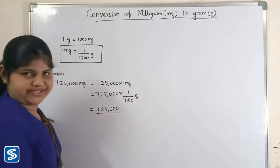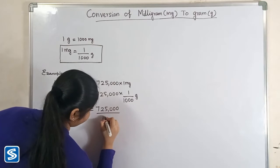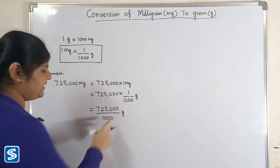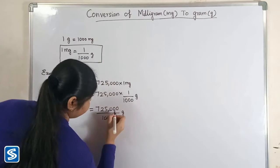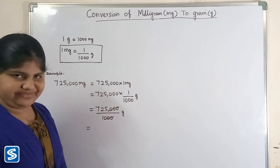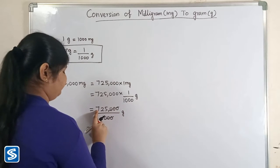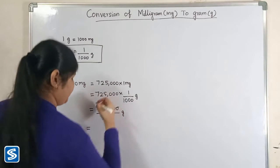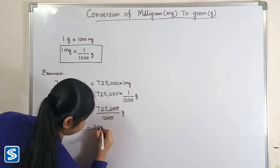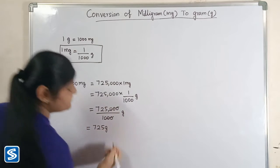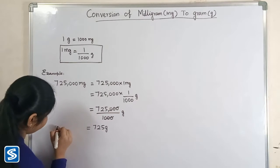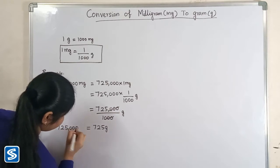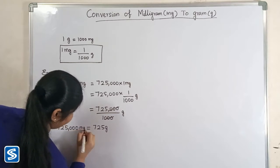So 725,000 divided by 1,000 grams. Here the zeros cancel out, so when we divide 725,000 by 1,000, our answer will be 725 grams. So 725,000 milligrams is equal to 725 grams.